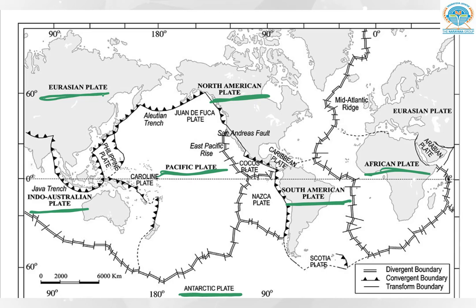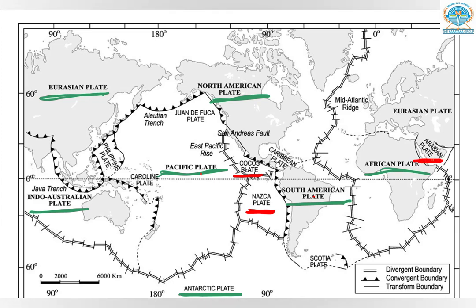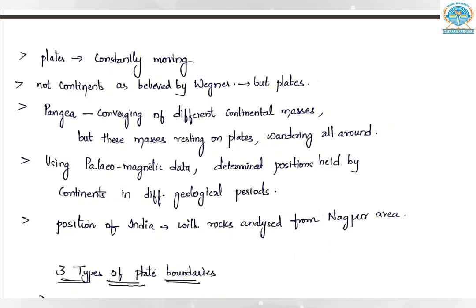We also have some minor plates, underlined in red. The Cocos plate is between Central America and the Pacific plate. The Nazca plate is between South America and the Pacific plate. The Arabian plate is the landmass of Saudi Arabia. The Philippine plate lies between the Asiatic and Pacific plates.